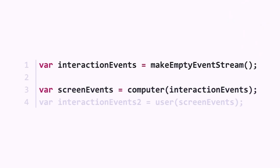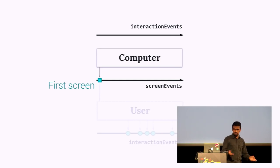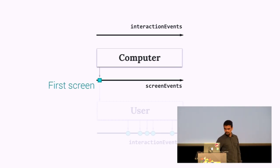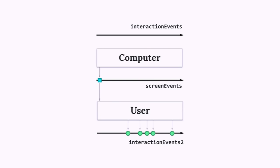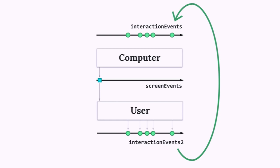Now that screen events is available, we apply the user function on it and get a second interaction events. When we call the computer function on an empty event stream, we get screen events — which starts with a default login screen, because if you don't interact, at least you see that. We apply screen events on the user and get the real interaction events coming from the real user. We have two interaction events, so we copy-paste whatever happens on the second one back into the first. Whenever an event happens on the second, it's replicated into the first — a closed loop.